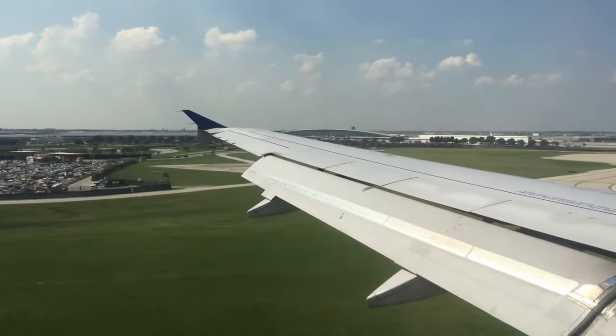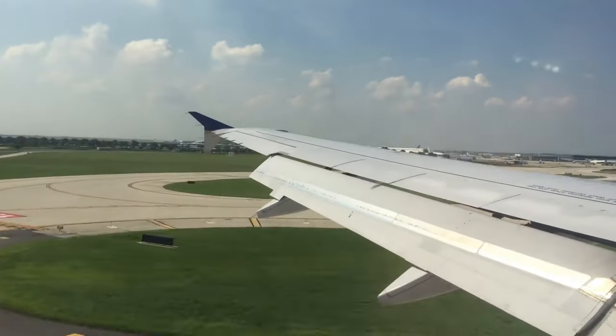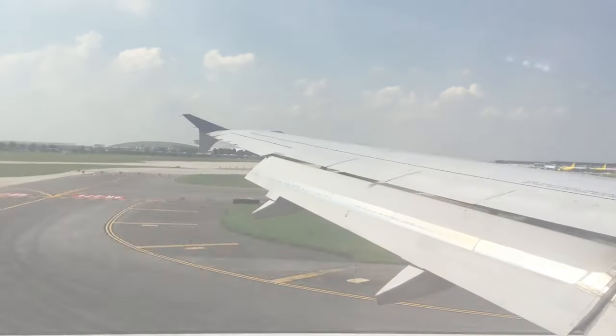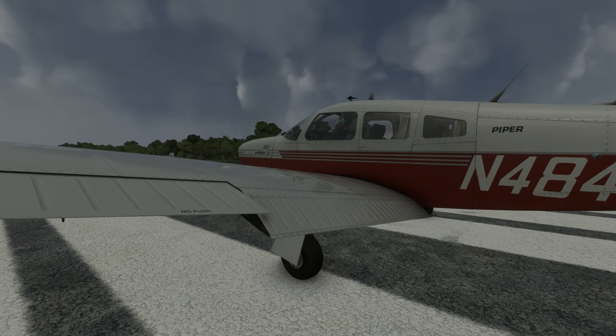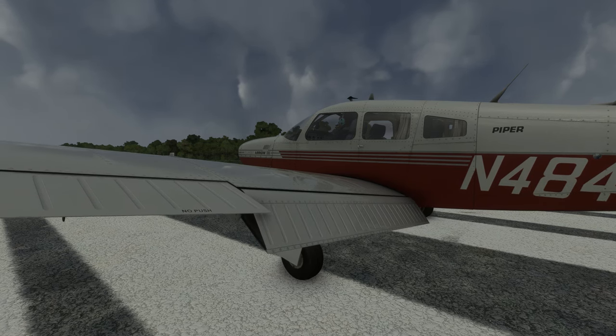Not every aircraft has flaps. They're a secondary control surface, but even many of the smaller general aviation aircraft, like the Piper Arrow here, will have flaps which raise and lower, somewhat like they do on the airliners.